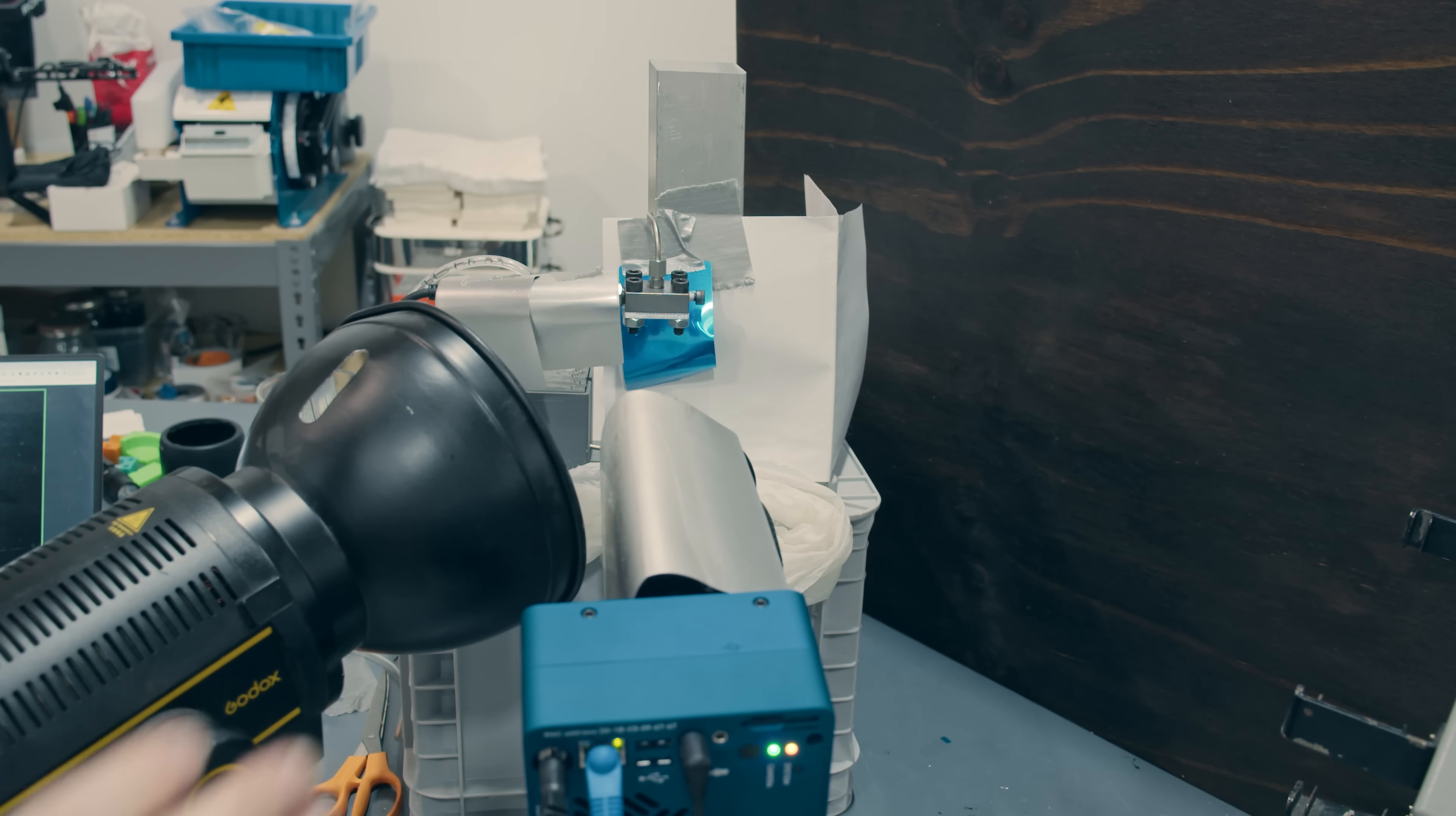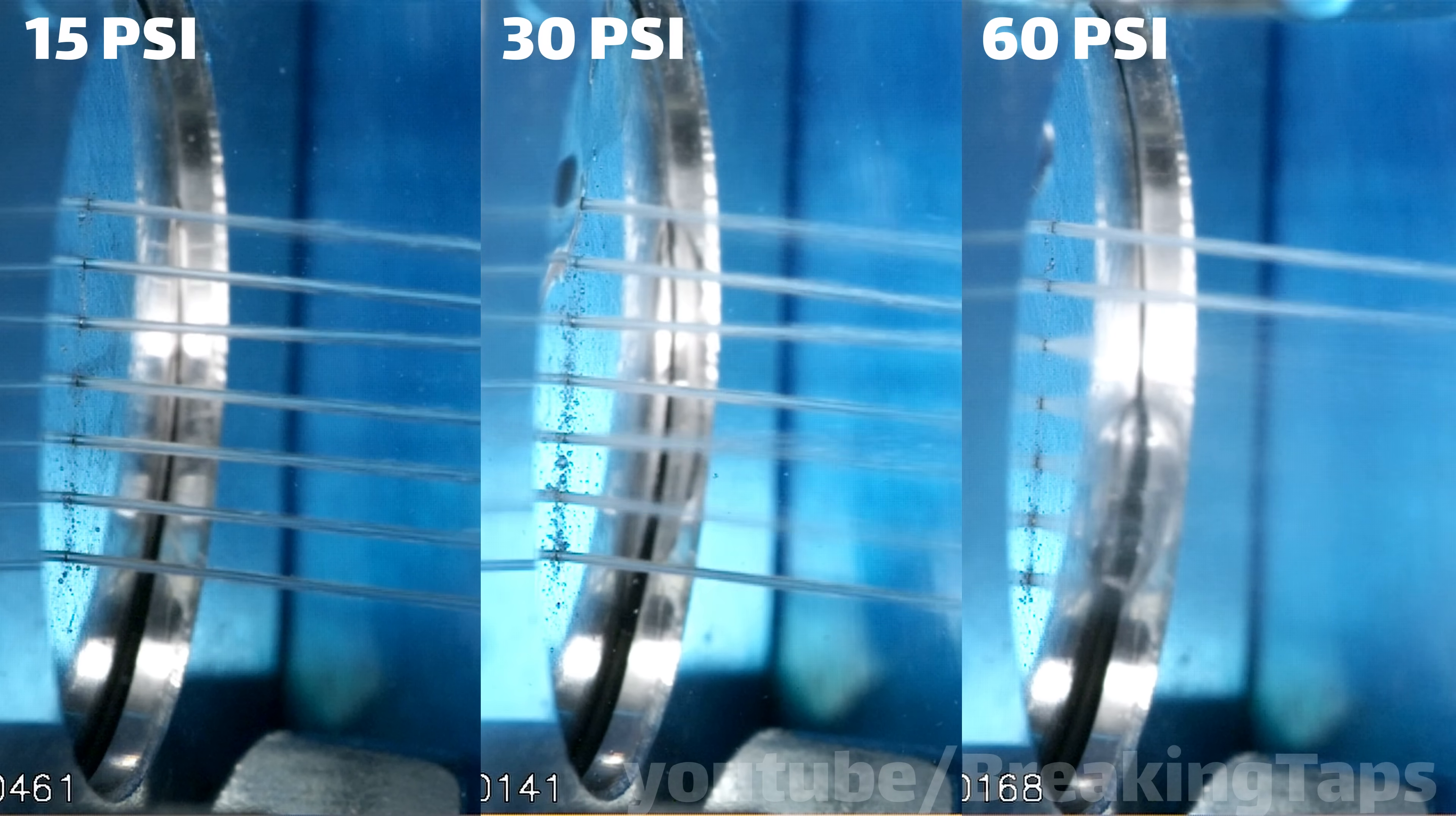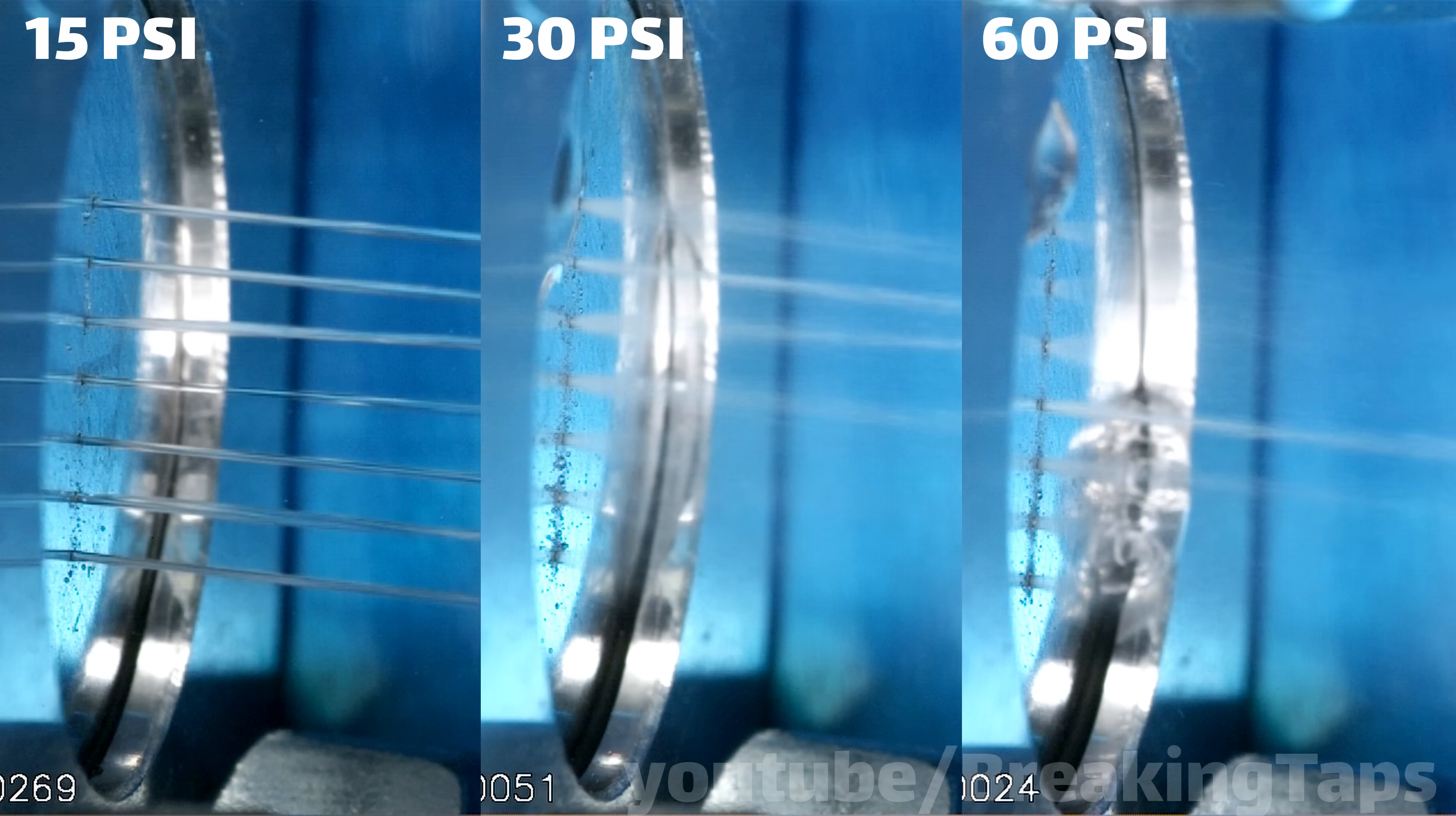The linear shower head design shows much more laminar flow, even at high pressures compared to before. And it's interesting, whereas the first set of holes at high pressure completely atomized, here it stays pretty laminar, even up to 60 psi.